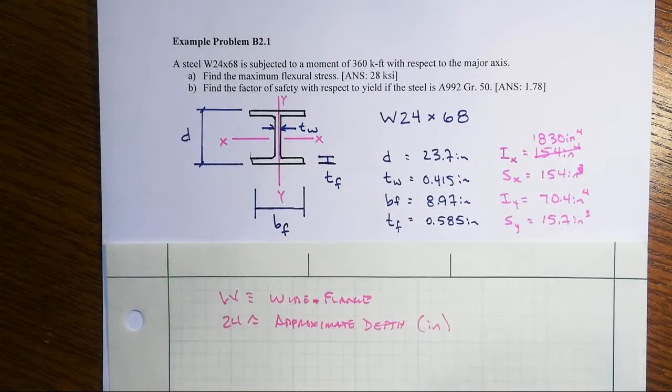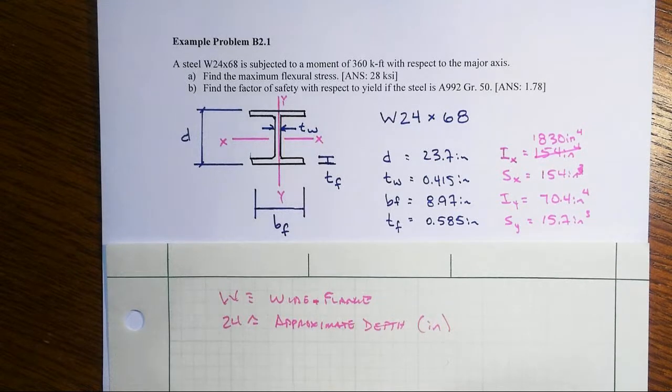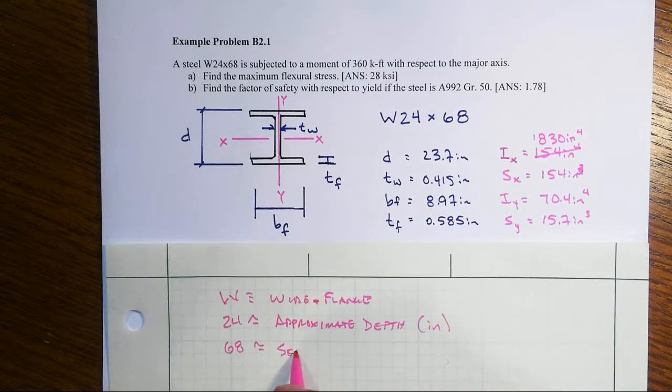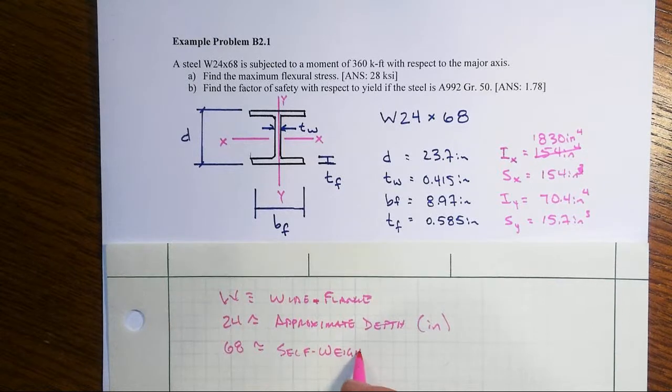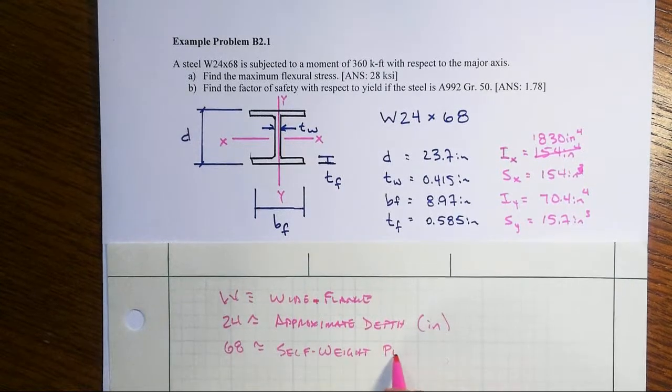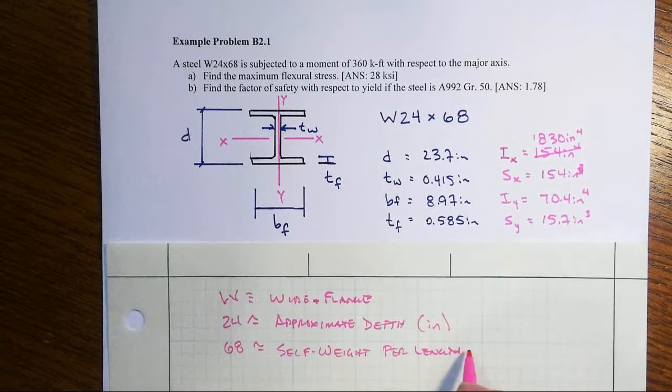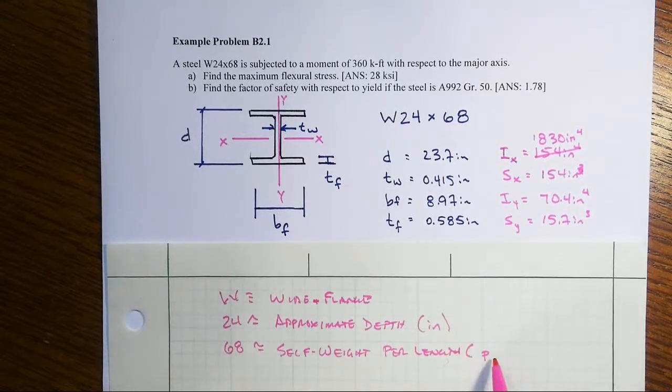That would not be the case in the SI system, which it would be in millimeters in that case. And then the next number, the 68, is approximately the self-weight of this cross-section per length in units of pounds per foot.